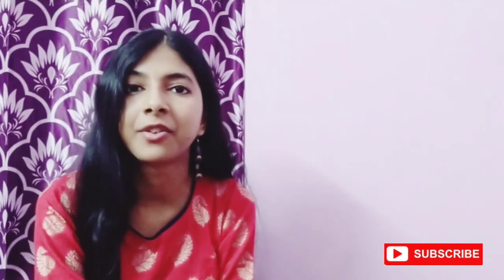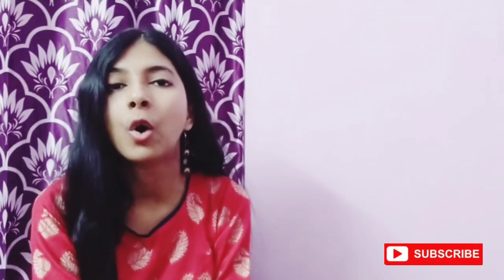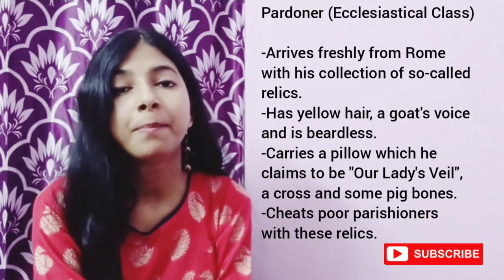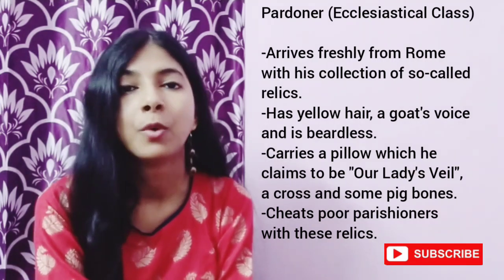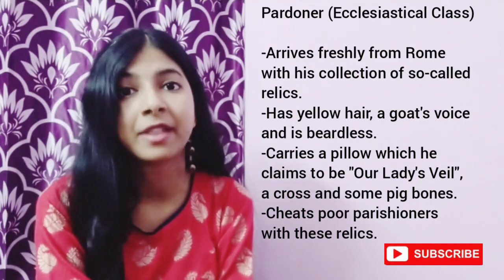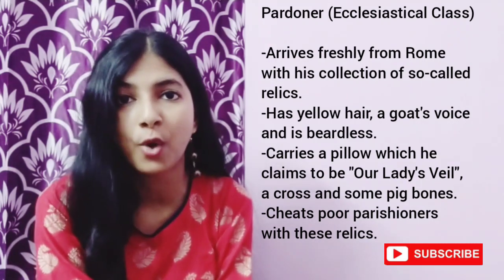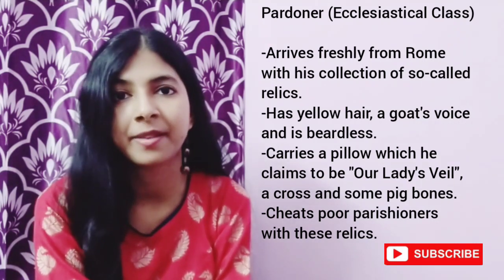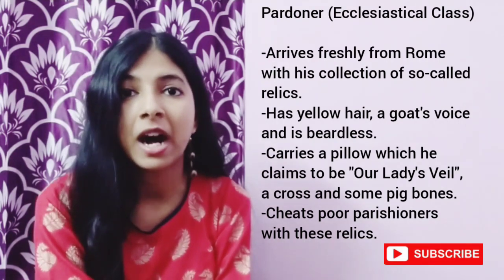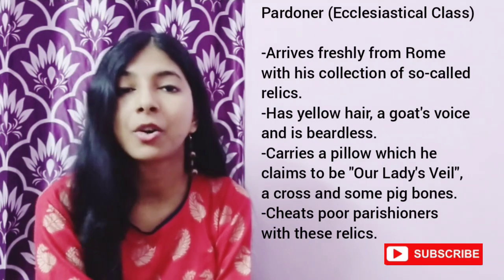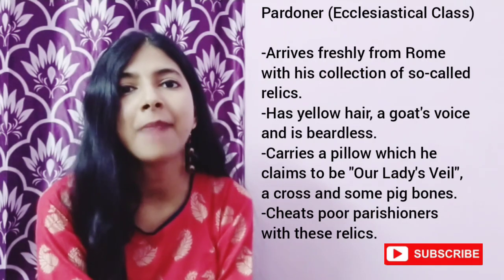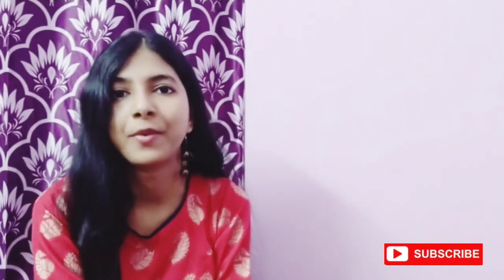Finally, we have the Pardoner, who also belongs to the ecclesiastical class. The Pardoner arrives freshly from Rome with his newly collected relics. He has yellow hair, a goat's voice and is beardless. He carries a pillow which he claims to be Our Lady's veil, a cross and some pig's bones. He cheats poor parishioners with these relics.